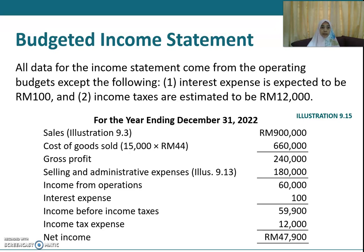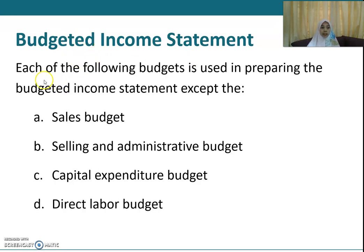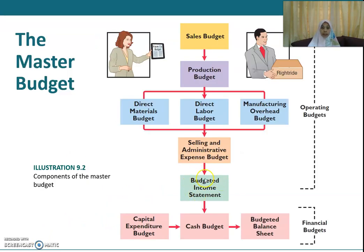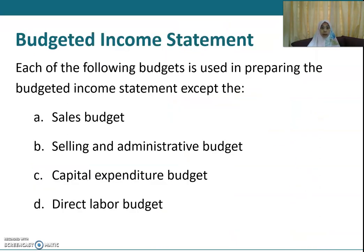Hopefully you have a better understanding. Try to answer this question: each of the following budgets is used in preparing the budgeted income statement except — the sales budget, selling and administrative budget, capital expenditure budget, or direct labor budget? To prepare the budgeted income statement, you require the sales budget, selling and admin budget, and direct labor budget, but not the capital expenditure budget, which belongs to the financial budget, not the operating budgets. So the answer is the capital expenditure budget. Thank you.